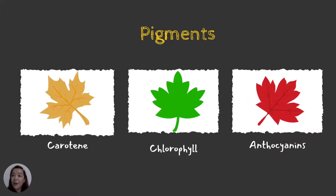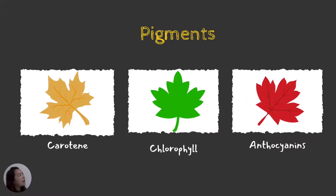The carotene pigment is like in carrots. Mango is yellow, banana is also yellow — these contain carotene. Papaya is orange, and cantaloupe is the same. These are examples of fruits and vegetables with carotene pigment.